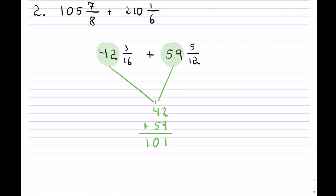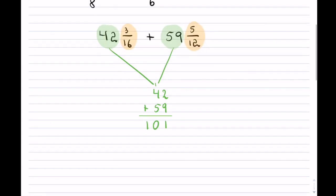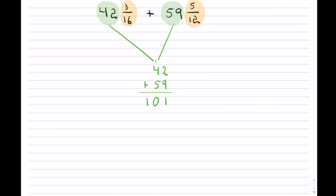Now next, what you do is you simply take your two fractions and you will add those up. Now, of course, in order to add them, they have to have a common denominator. So we have 3 over 16 plus 5 over 12.